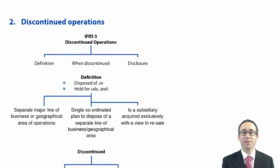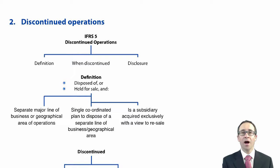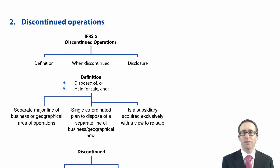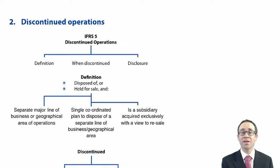With discontinued operations there are three things that we need to go through and consider. First, we need to look at the definition of a discontinued operation. We then need to look at when it is discontinued — when we can begin to make the separate disclosure. And third, we need to look at what actual disclosure is required within the financial statements: what we show in the statement of profit or loss, the statement of financial position, and the statement of cash flows.